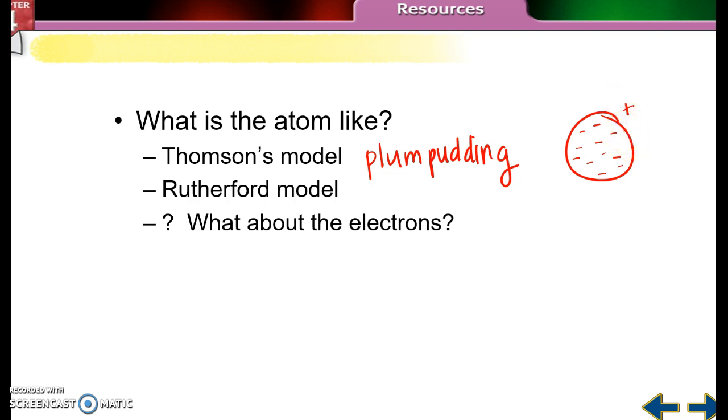Then you had Rutherford who came up with the nuclear model. Remember, he shot the alpha particles at the gold foil and he thought they would go straight through that whole positive sphere, but some of them reflected back at pretty big angles. He came up with the idea of the nucleus. You have a positive nucleus in the middle, it's really dense, that's where all your protons are. And then you've got these electrons that are scattered around the outside.